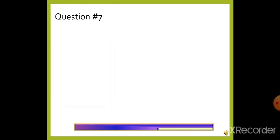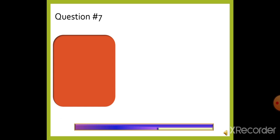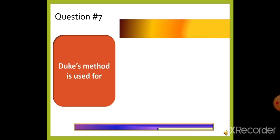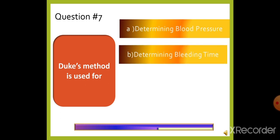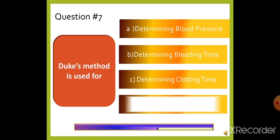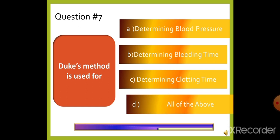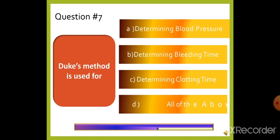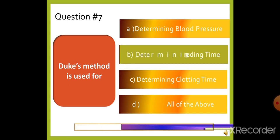Question 7: Duke's method is used for — option A: Determining blood pressure, option B: Determining bleeding time, option C: Determining clotting time, or option D: All of the above. Duke's method is used for determining bleeding time.